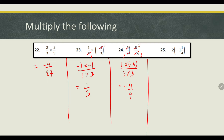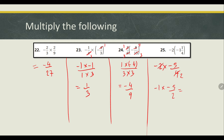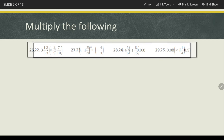For the next one, first we're going to convert it into an improper fraction. So we have negative 2 multiplied with negative 5 over 4. These two will simplify to 2, so we get negative 1 times negative 5 over 2, which is 5 over 2, which is 2 and a half.